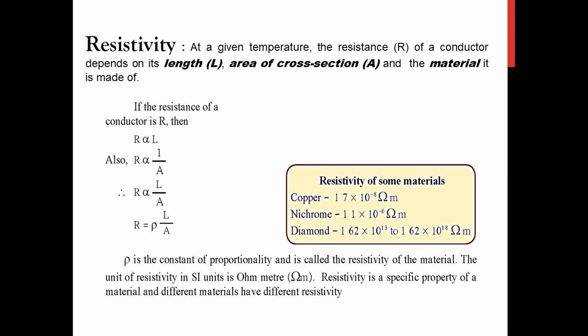We have learned about resistance in the previous class. Today we are going to discuss resistivity. To understand resistivity, understanding resistance is very important. Resistivity is nothing but resistance per unit length — resistance of a substance per unit length. At a given temperature, the resistance of a conductor depends upon the length of the conductor, the area of cross-section of the conductor, and the material used for making the conductor.